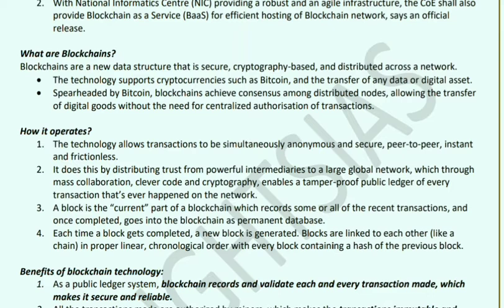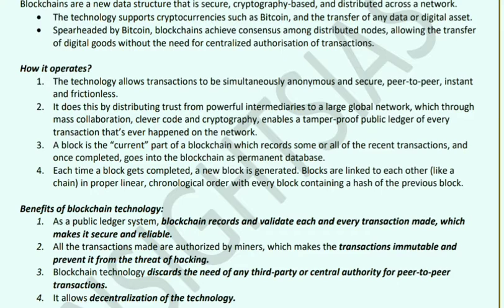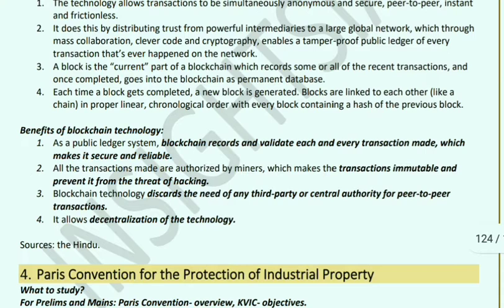Blockchain is superheaded by Bitcoin. Blockchains maintain consensus for distributed nodes and can transfer digital goods without centralized authorization. The technology allows transactions to be secure, peer-to-peer, instant, and frictionless. It distributes trust among powerful intermediaries across a large global network, enabling mass collaboration. The 'block' is the current part of a blockchain that records some or all recent transactions. Once complete, it moves into the blockchain as a permanent database. Each time a block is completed, a new block is generated, and blocks are linked together in proper linear chronological order.